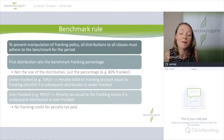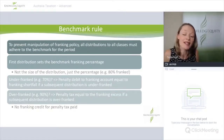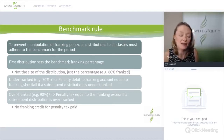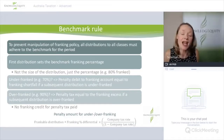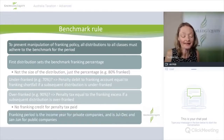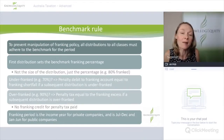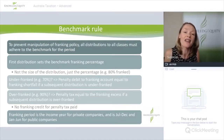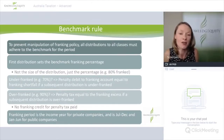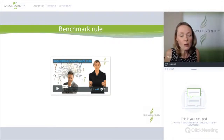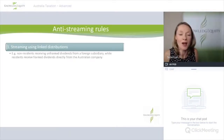A company can frank a distribution to any percentage up to 100%, subject to the benchmark rule — an integrity rule requiring that within a franking period all distributions must be franked to the same extent. This prevents selective streaming of franking credits to certain shareholders. The benchmark rule applies to most but not all companies — it doesn't apply to listed public companies with only a single class of membership. The first distribution within the period sets the benchmark franking percentage. The franking period is the income year for private companies; for public companies it is split into two six-month periods.